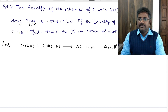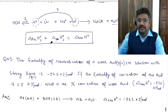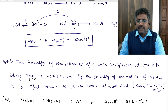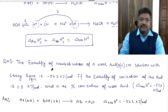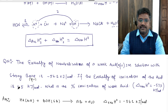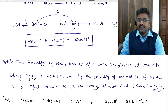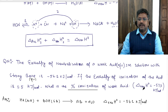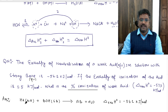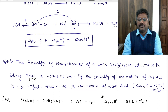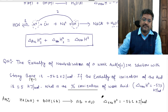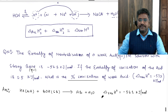The enthalpy of neutralization of a weak acid with n factor 1 — a 1 molar solution — with a strong base is minus 56.1 kilojoules per mole. If the enthalpy of ionization of the acid is 1.5 kilojoules per mole, what is the percentage ionization of the weak acid? This is a different kind of question in which the standard data given is for strong acid-strong base.